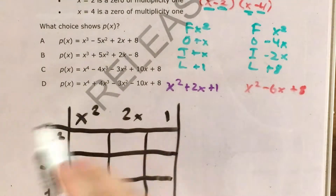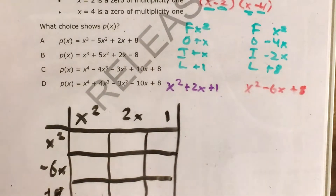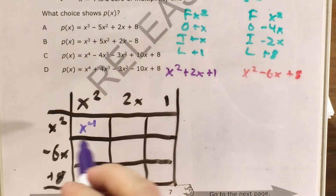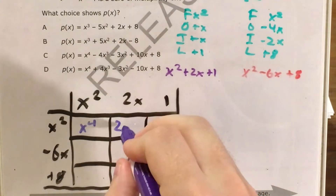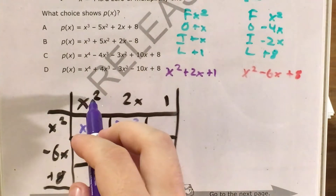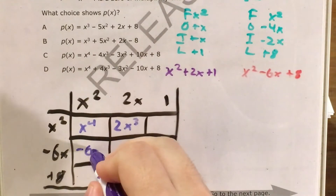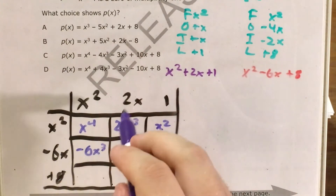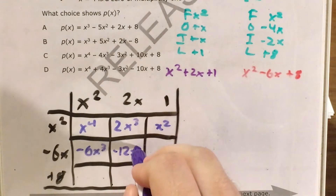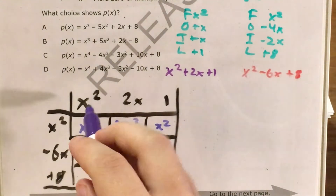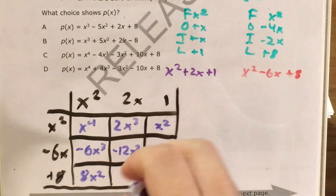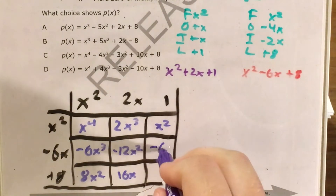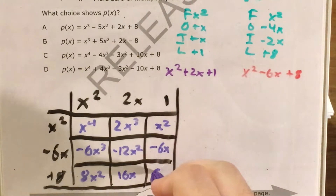For each box, I'm going to multiply what's in the row by what's in the corresponding column. So: x squared times x squared gives me x to the fourth; x squared times 2x gives me 2x cubed; x squared times negative 6x gives me negative 6x cubed; x squared times 1 gives me x squared; negative 6x times positive 2x gives me negative 12x squared; positive 8 times x squared gives me 8x squared; 8 times 2x gives me 16x; negative 6x times 1 gives me negative 6x; and 8 times 1 gives me 8.